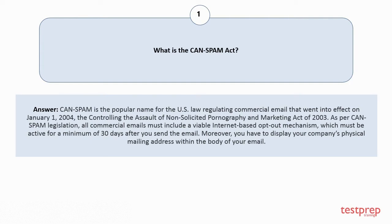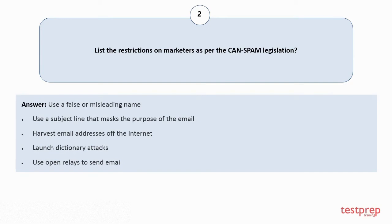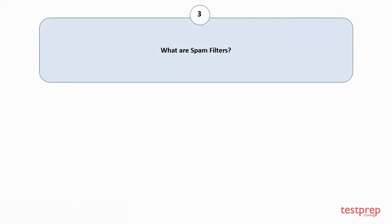Moreover, you have to display your company's physical mailing address within the body of your email. Question number two: List the restrictions on marketers as per the CAN-SPAM legislation. The restrictions are: one, use a false or misleading name; two, use a subject line that masks the purpose of the email; three, harvest email addresses off the internet; four, launch dictionary attacks; five, use open relays to send email.